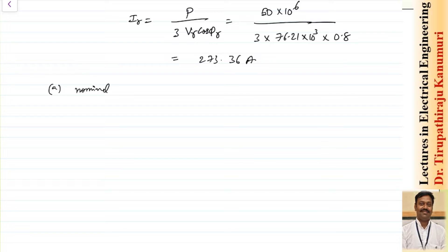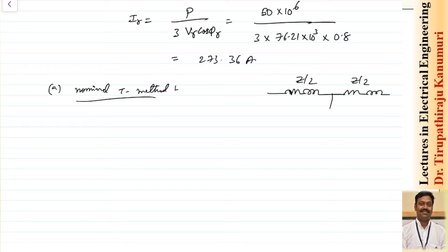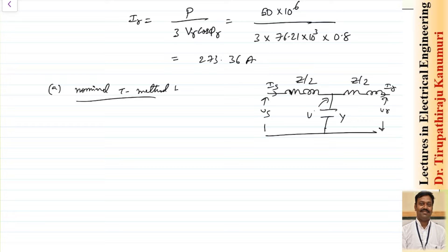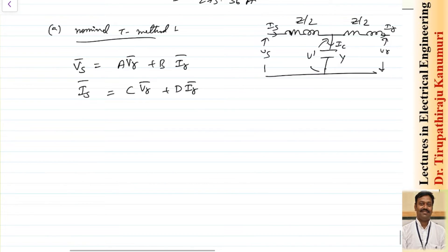Starting with the nominal T method. In this method, the impedance is divided into two equal halves (Z/2 each), with admittance Y in the middle. We use the ABCD parameter approach: Vs = A·Vr + B·Ir and Is = C·Vr + D·Ir. You can directly substitute the ABCD values or solve using the conventional procedure.